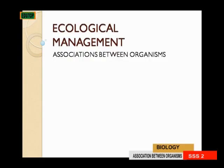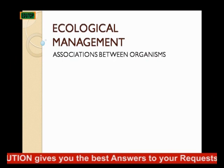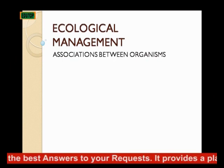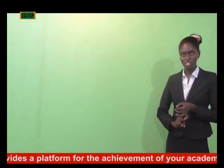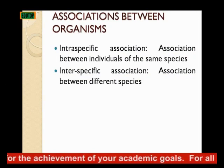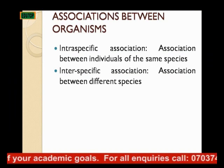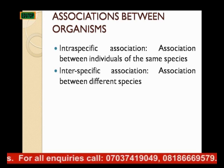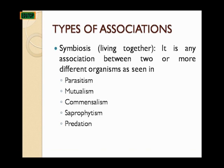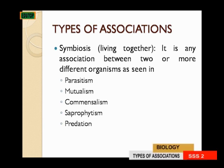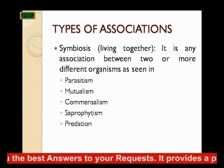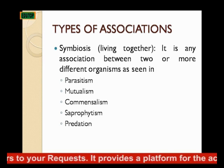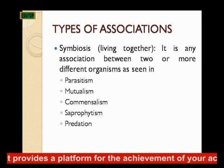Now we will be talking about ecological management, specifically associations between organisms. There are two types: intraspecific association, which is the association between individuals of the same species, and interspecific association, which is association between different species. The types of association fall under symbiosis, which means living together. Symbiosis is any association between two or more different organisms, and we see examples in parasitism, mutualism, commensalism, and predation.